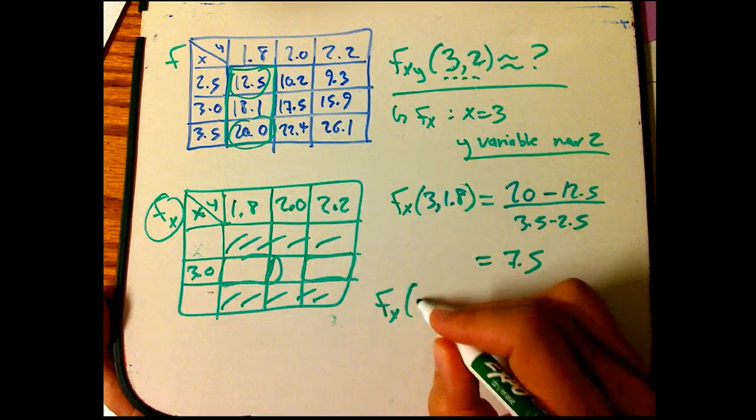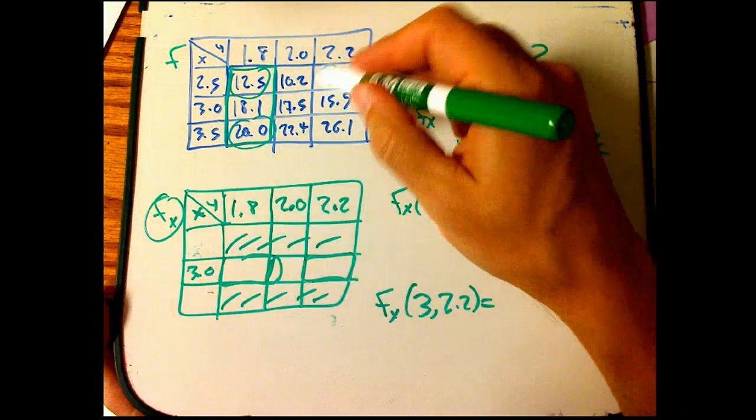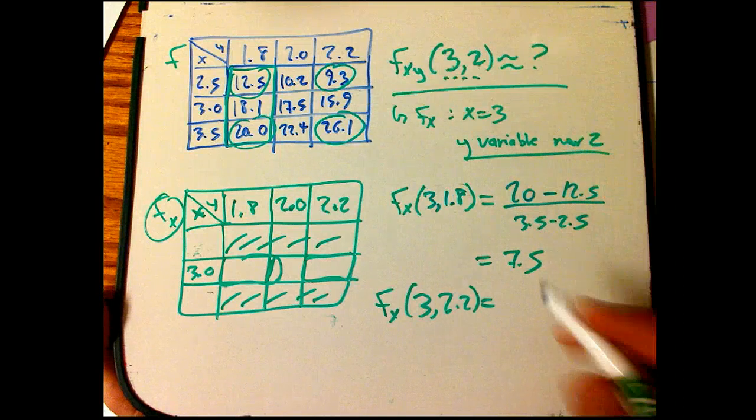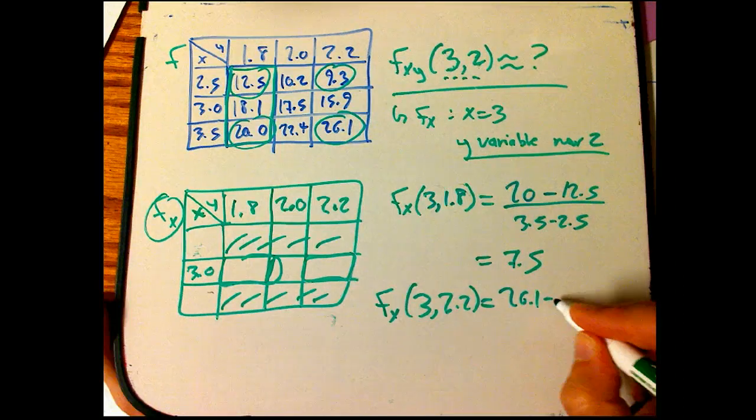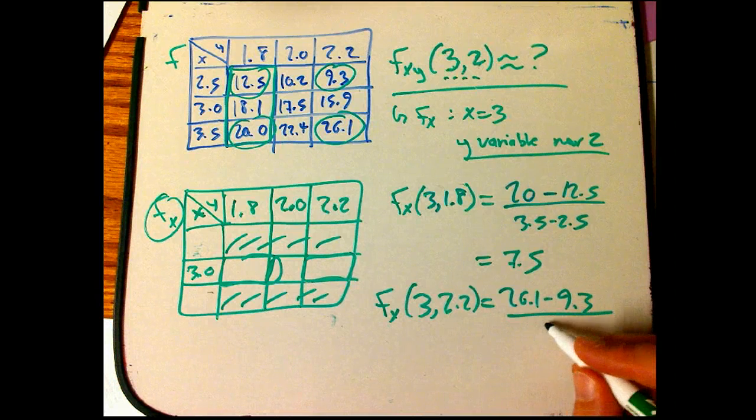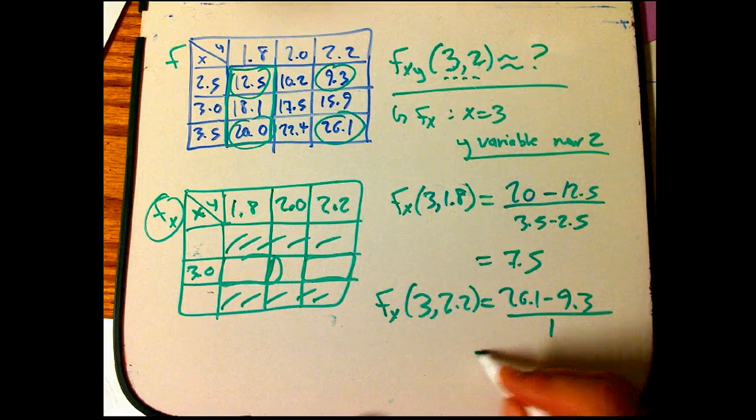Now fx at (3,2.2). That uses these values. Because I'm going to bracket the 3 value again. 26.1 minus 9.3 over just a 1 again. It's the same spread in x values. And that is 16.8.